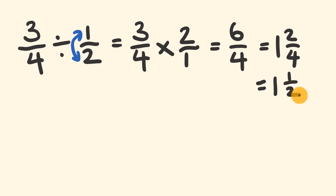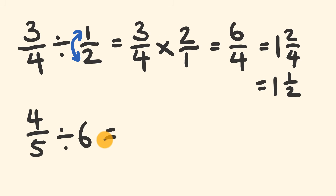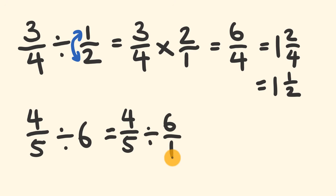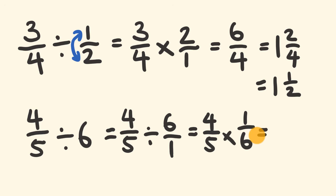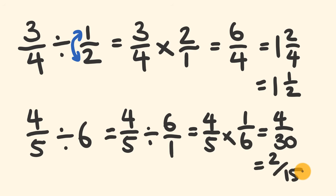What if we're dividing by a whole number? Say four fifths divided by six. We write 6 as a fraction: 6 over 1. To divide, we multiply by the reciprocal: four fifths multiplied by 1 over 6. Four times 1 is 4, and 5 times 6 is 30, giving 4 over 30. Simplify: 2 goes into both top and bottom, giving 2 over 15. That's how you divide with fractions.